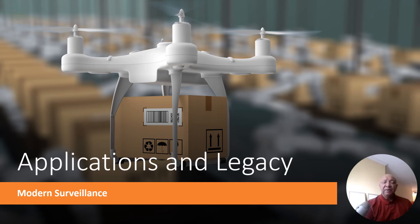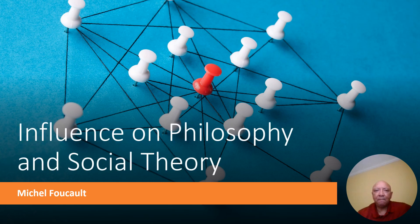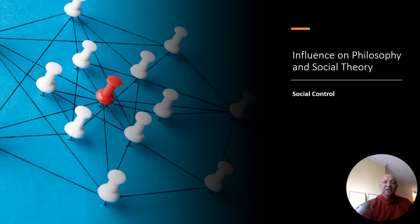In modern surveillance, the Panopticon has become a powerful metaphor for modern surveillance practices, especially with the advent of digital technologies that enable continuous monitoring. Regarding its influence on philosophy and social theory, the French philosopher Michel Foucault extensively analyzed the Panopticon in his book Discipline and Punish. He used it as a metaphor for modern disciplinary societies where surveillance and the threat of being watched extend beyond physical institutions to various aspects of life. The Panopticon is also often referenced in discussions about the balance between security and privacy, illustrating the ways in which surveillance can be used as a tool for social control.